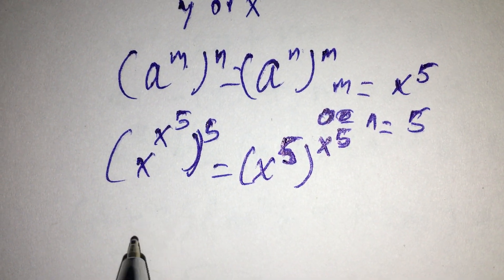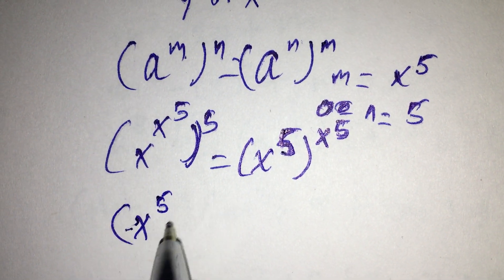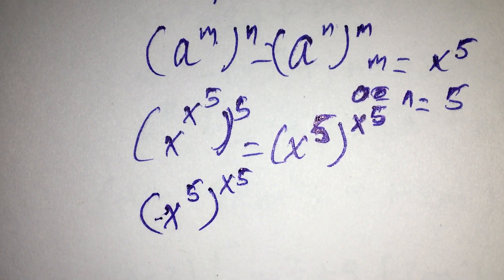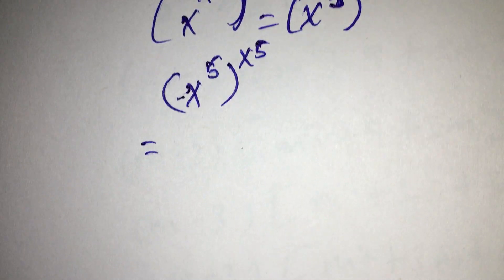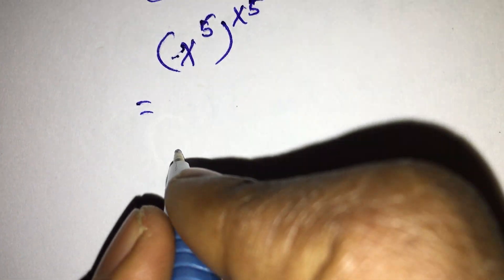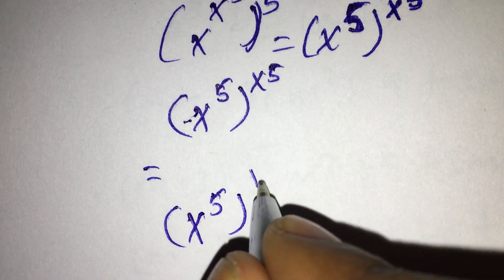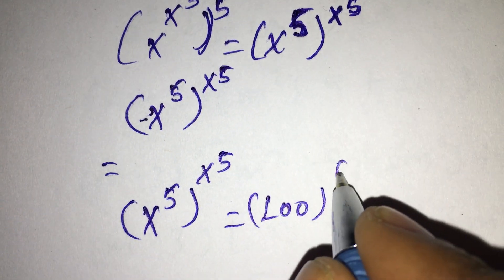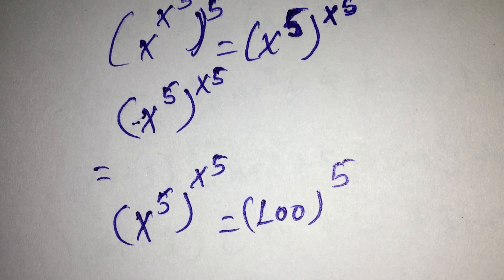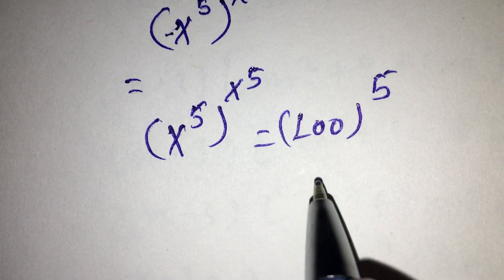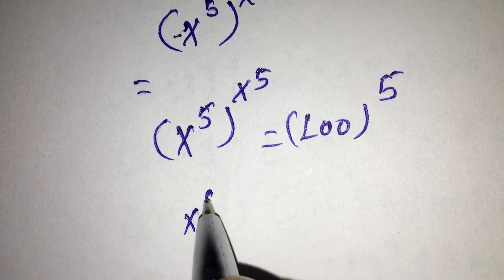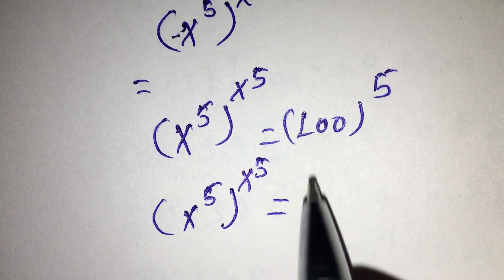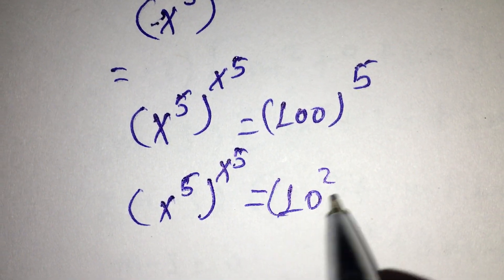So our equation will be: x to the power of 5, the whole x to the power of 5. So next, x to the power of 5 times x to the power of 5, equal to 100 to the power of 5. Here, 100 equals 10 squared, so 100 to the power of 5 equals 10 squared times 5.